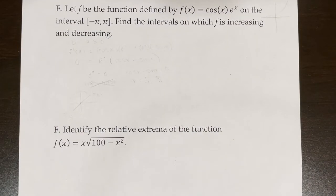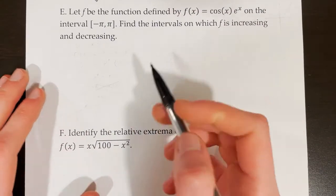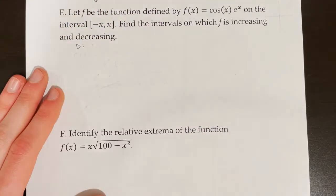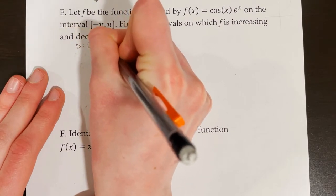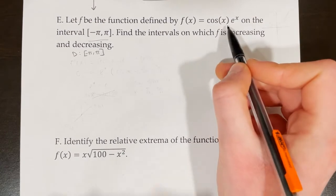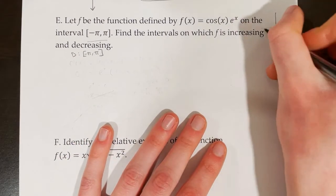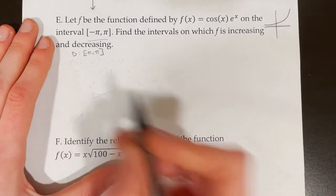Let f be the function defined by f of x equals cosine x times e to the x on the closed interval from negative pi to pi. Find the intervals on which f is increasing and decreasing. This is not one we can easily sketch, so we follow the process. The domain is given as the closed interval from negative pi to pi. Cosine x and e to the x are both defined for all x, so there are no additional domain restrictions.